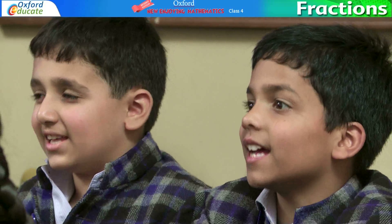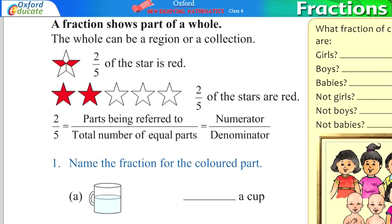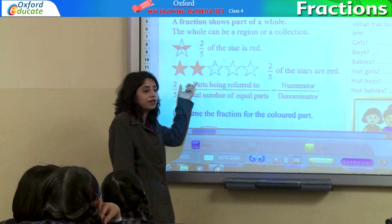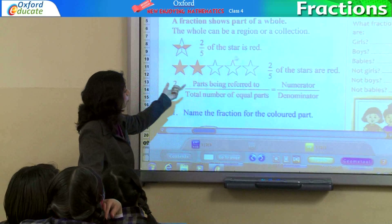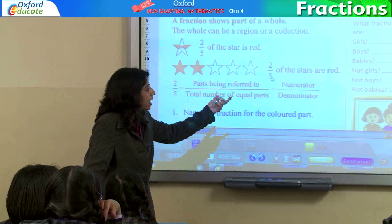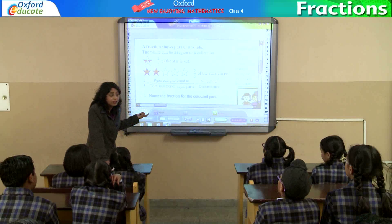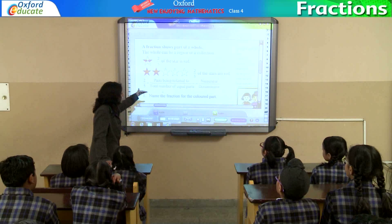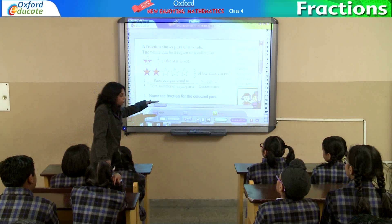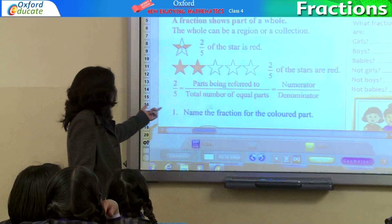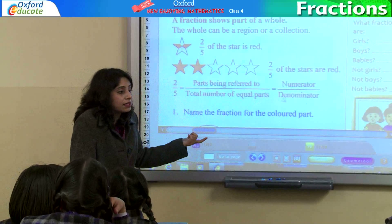Is it clear? Yes. And look at this. These are the collection of stars. How many stars do we have here? 5. Out of 5, how many are shaded? 2. So, 2 by 5 of the stars. We call it as fractions. And the part being shaded, therefore 2 is called as? Numerator. And what do we call the total number of parts?